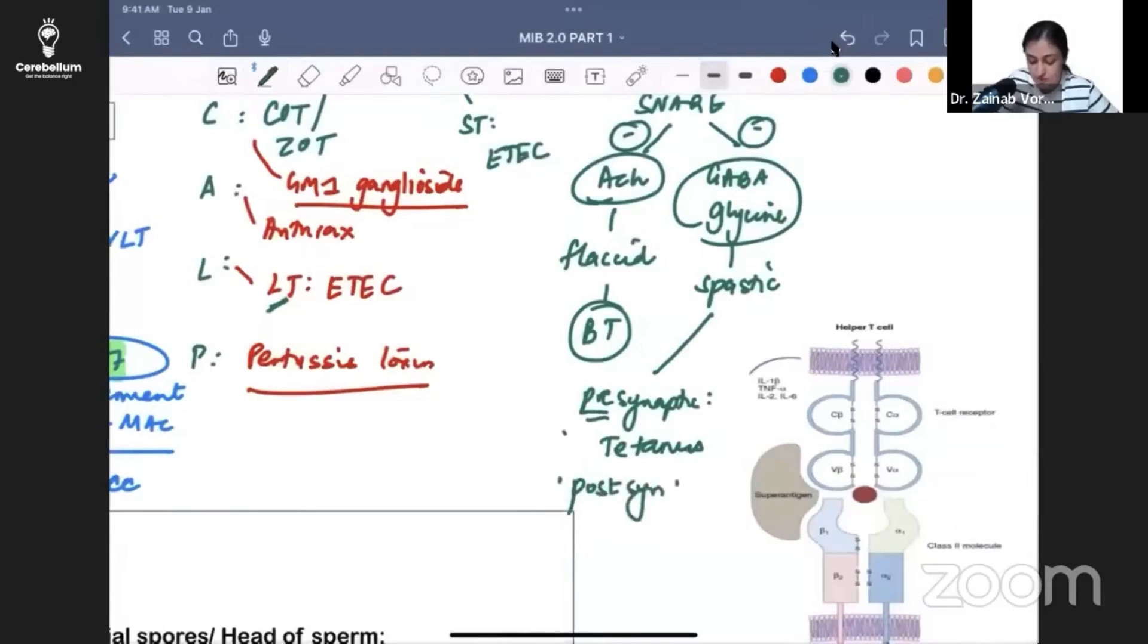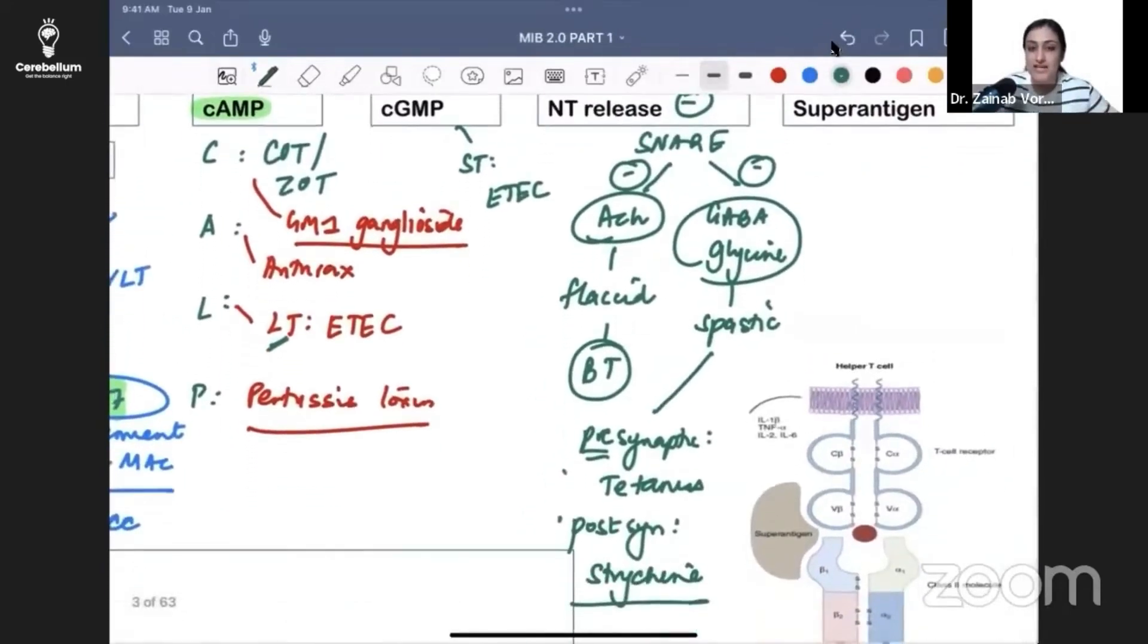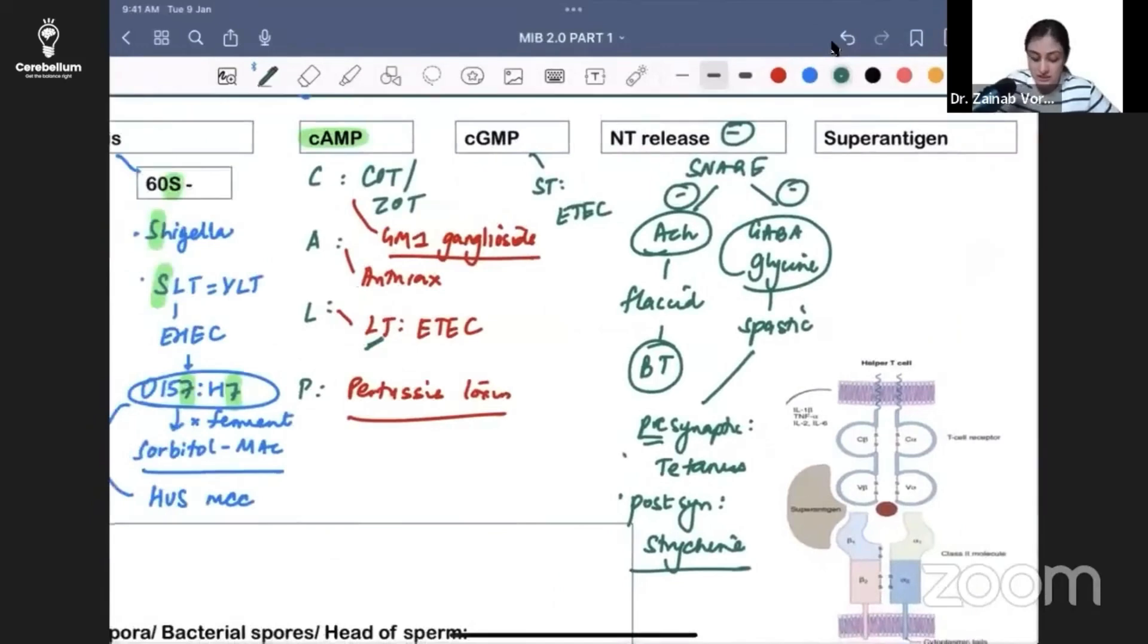This is about spastic paralysis. Superantigen was questioned last time - three questions from last INI-CET. Cholera ZOT zonula occludence - did I mention that? I think I forgot: cholera is zonula occludence is one repeat, elongation factor-2 is the second repeat, and superantigen is the third repeat.